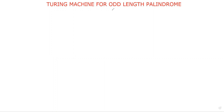Hi friends, welcome to our channel. In this session we will discuss how to design a Turing machine for odd-length palindrome. We already discussed the design of Turing machine for even-length palindrome. What do you mean by palindrome? The reverse of a number is equal to the original number — that is called a palindrome.